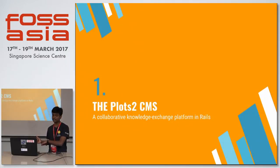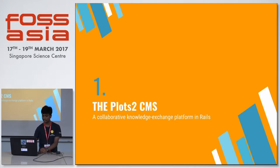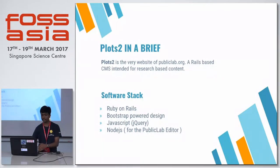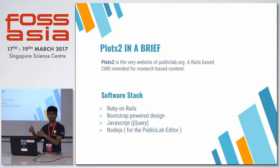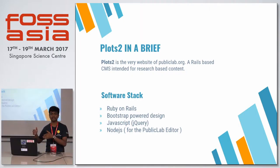Let me start with my GSOC project that I worked on during this summer — the Plots2 CMS. Plots2 is the main content management system of PublicLab.org. It is a research-based CMS designed in Rails. The backend is on Ruby on Rails, the frontend is a Bootstrap-based design, and we use a separate Node.js module for making the editor content.